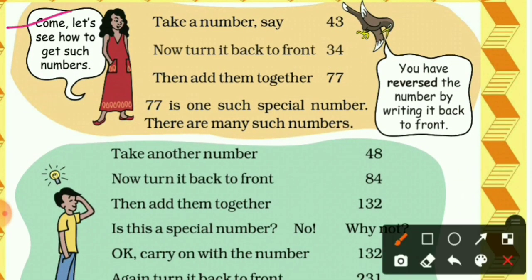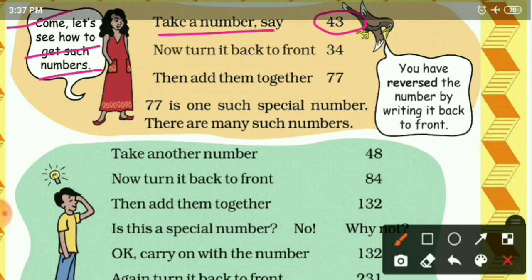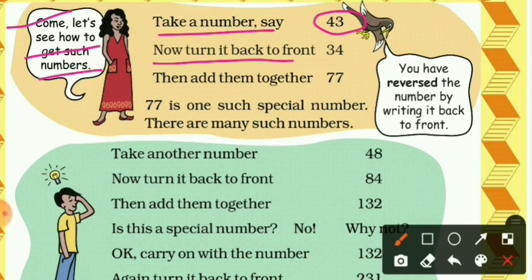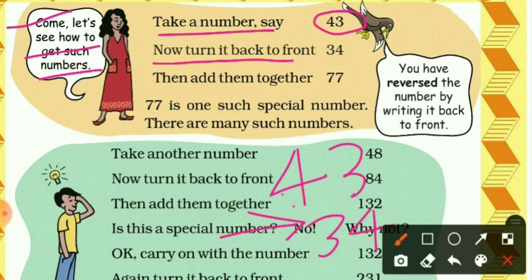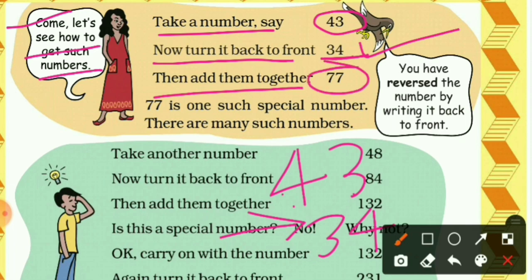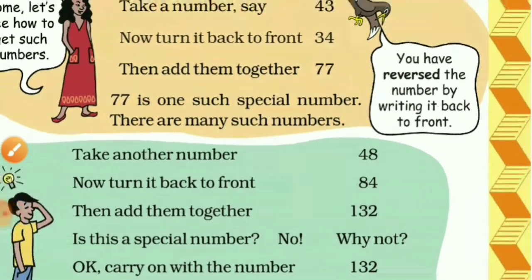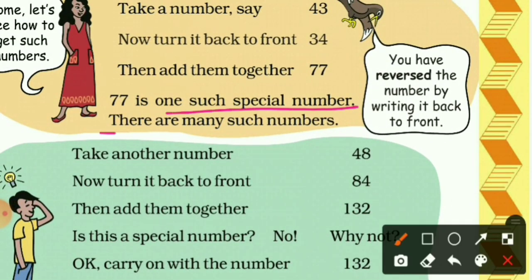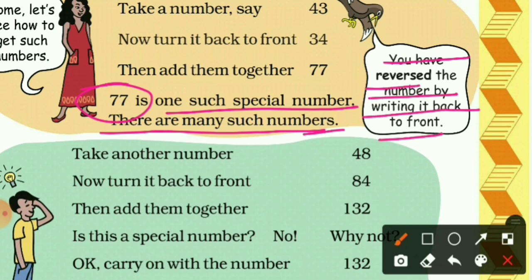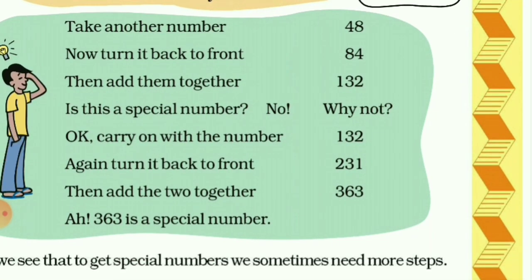Let's see how to get such numbers. Take the number 43. Turn it back to front: writing 43 backward gives 34. Now add them together: 43 plus 34 equals 77. So 77 is one such special number — a palindrome. Reading 77 forward and backward gives the same result.